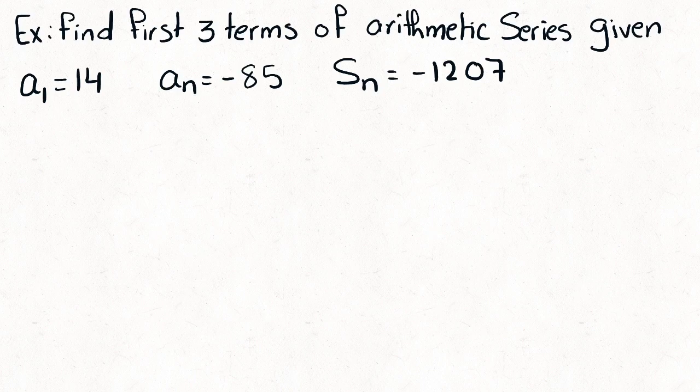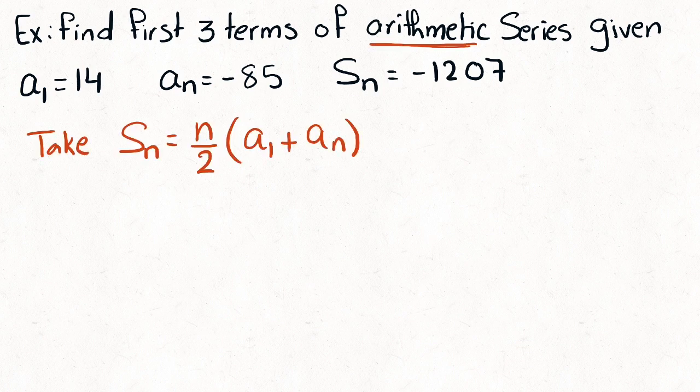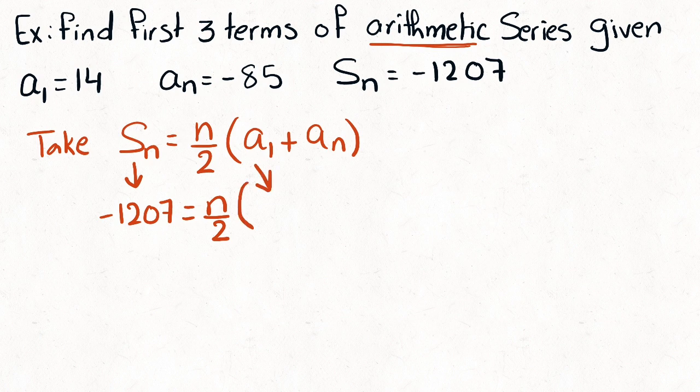Another type of question: find the first three terms given a1 = 14, a_n = negative 85, and the sum equals negative 1207. Apply the sum rule, replace the values, and your goal is to find the value of n.